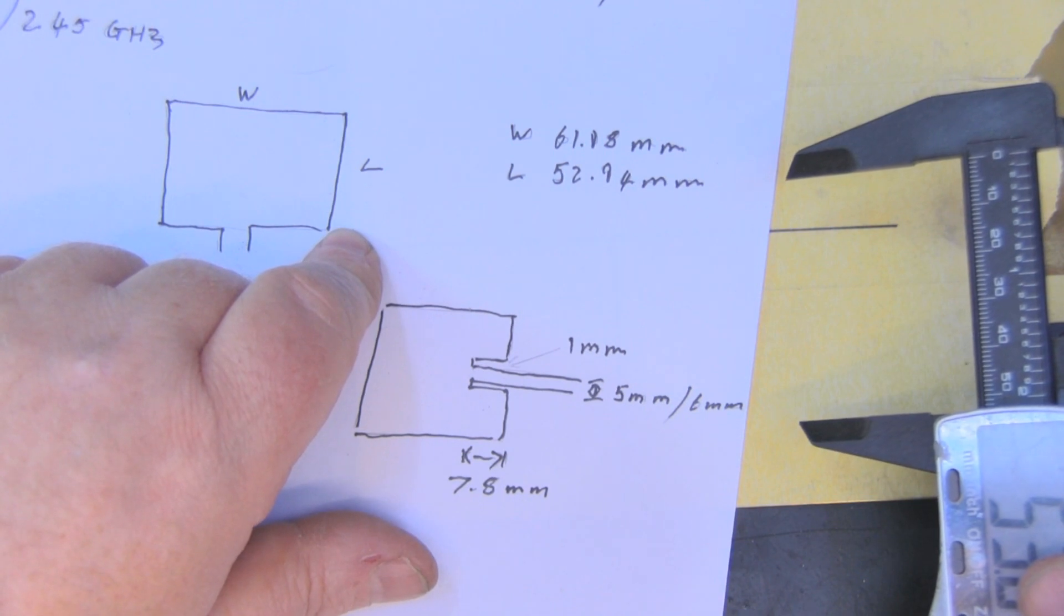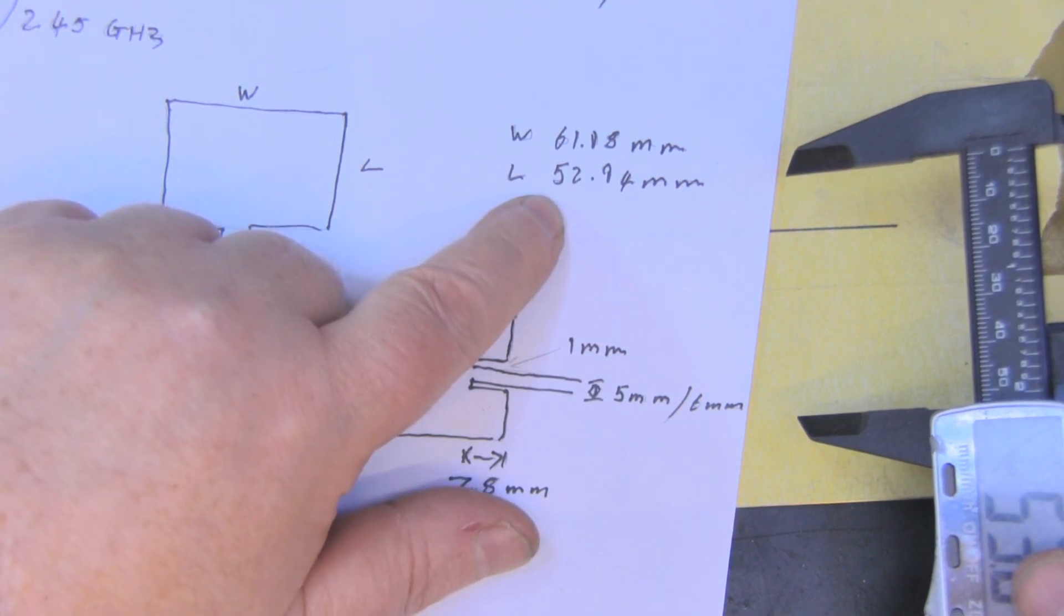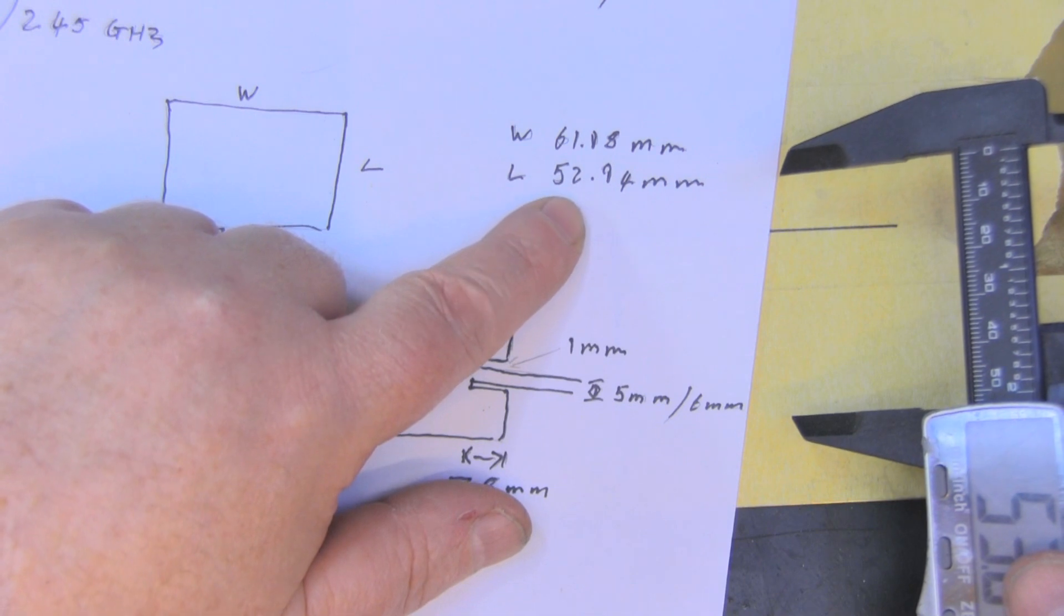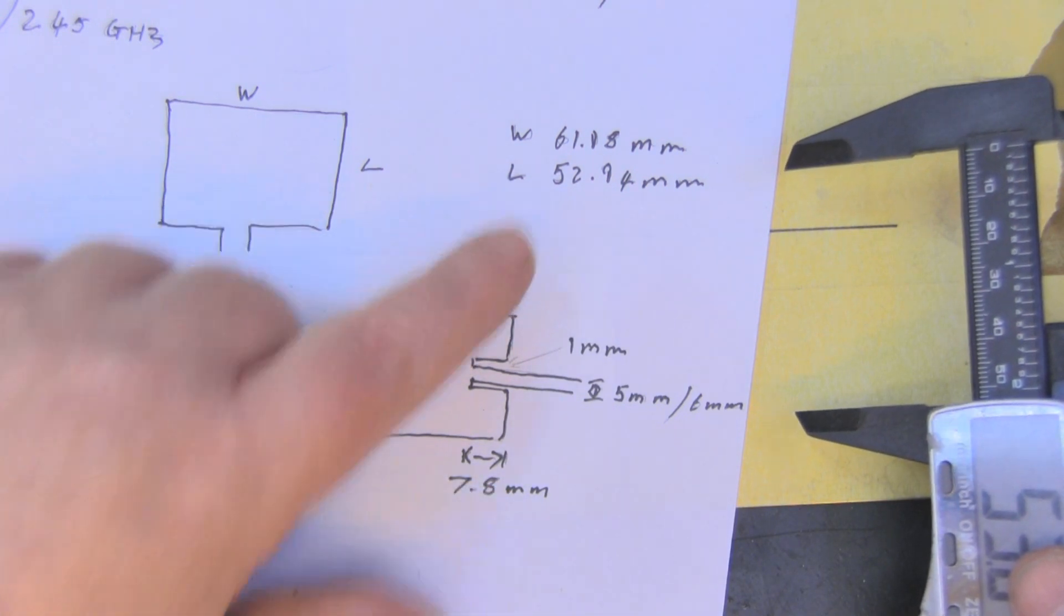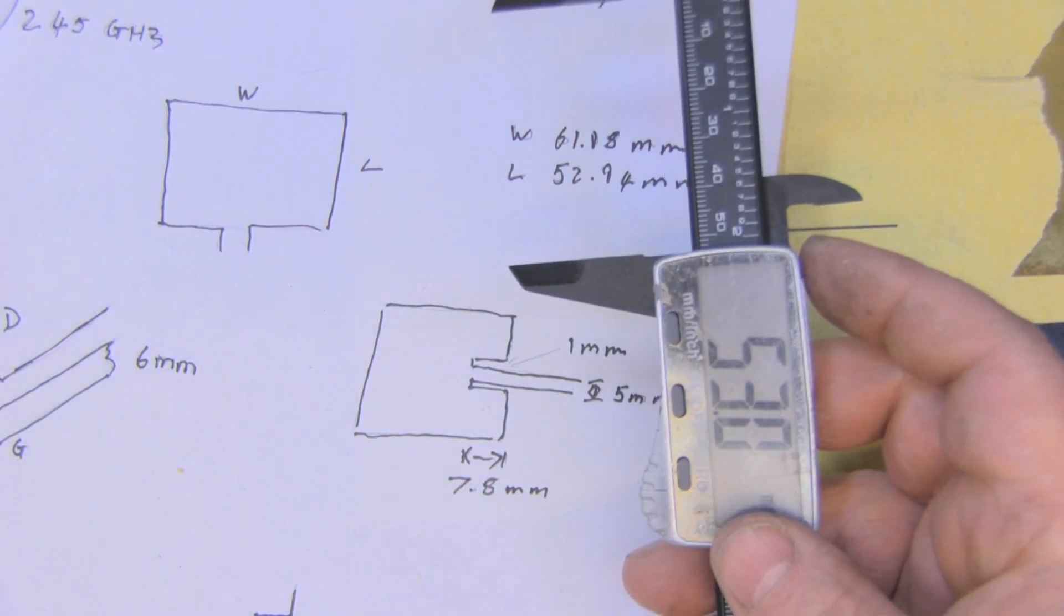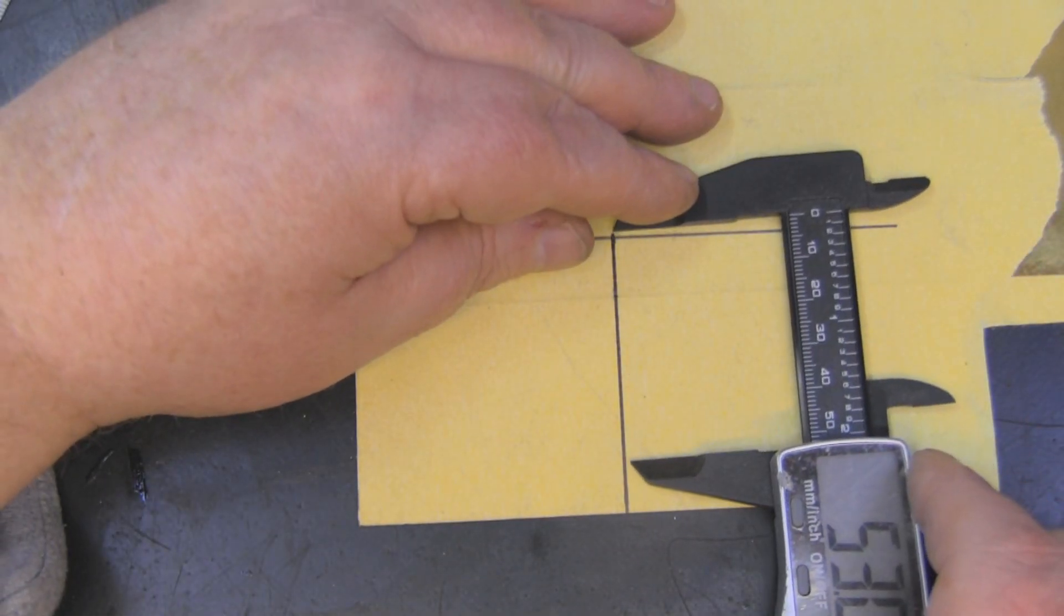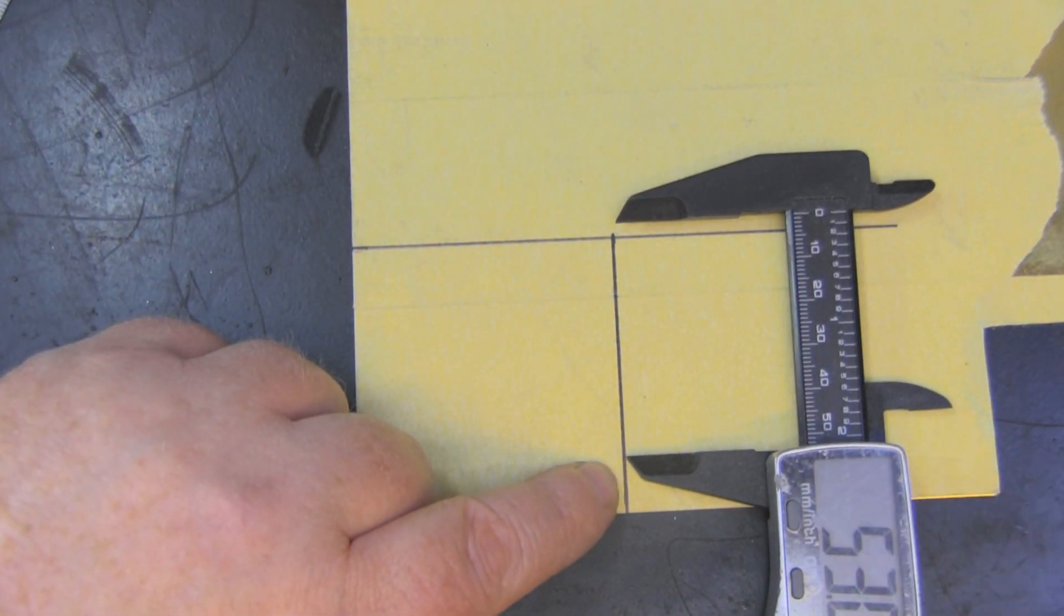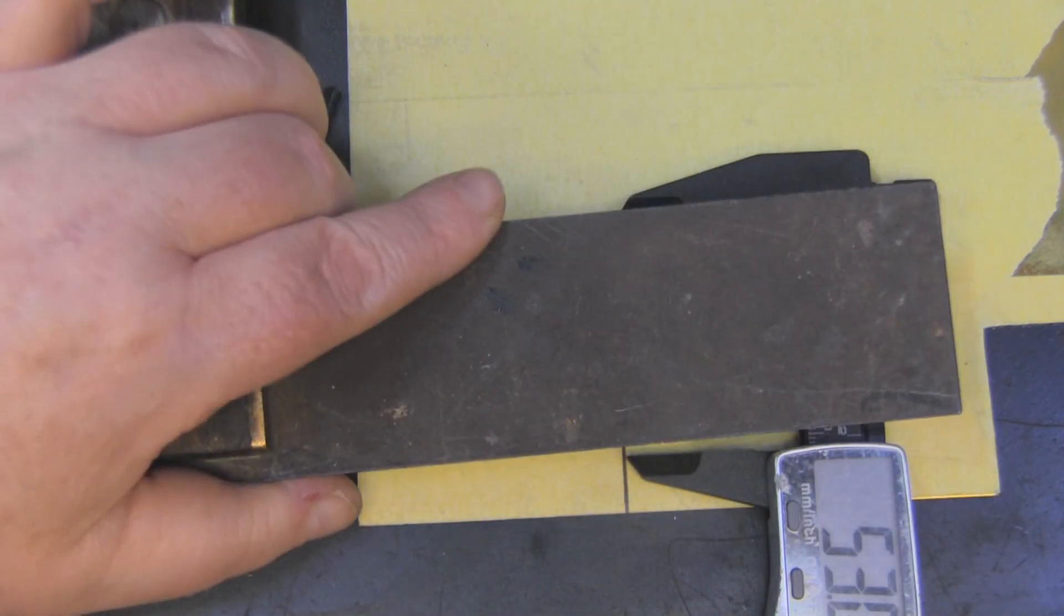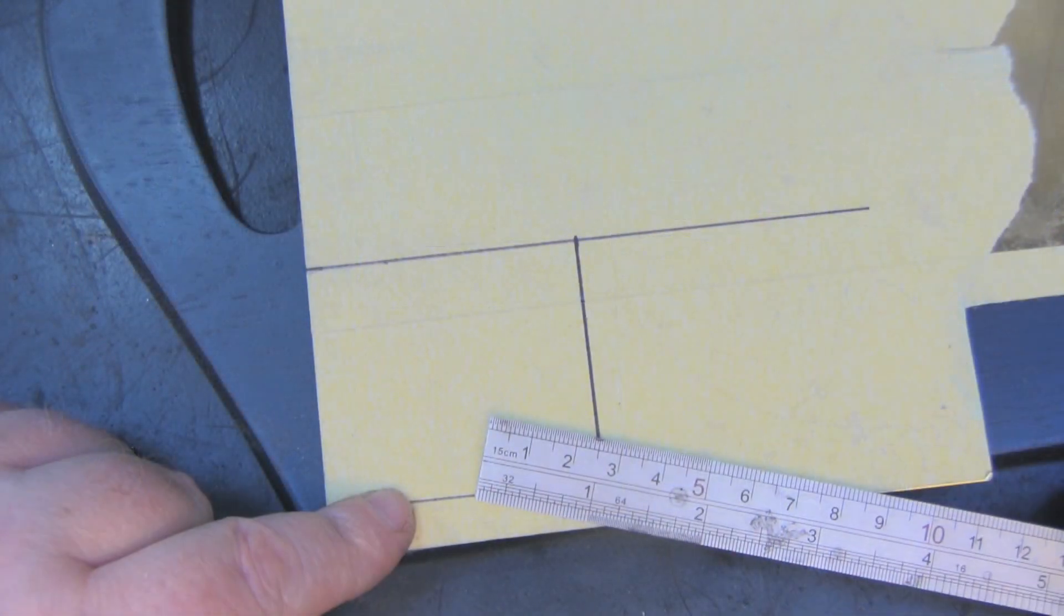Next I want to put a measurement line back on the length. I'm rounding this up to 53 millimeters. I've got 53 millimeters on my calipers - I'll put a little mark there and use my set square to draw a line across the bottom.